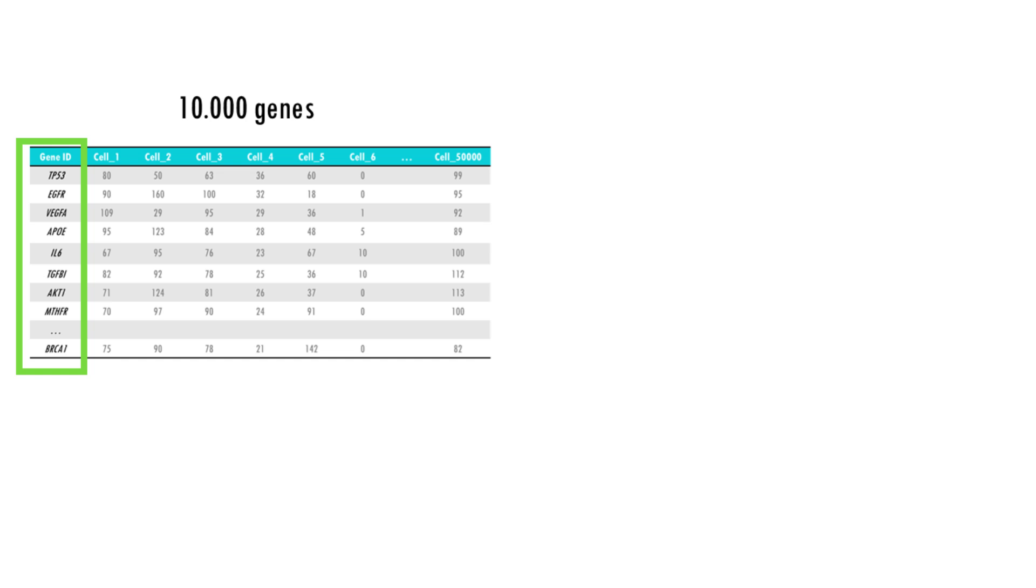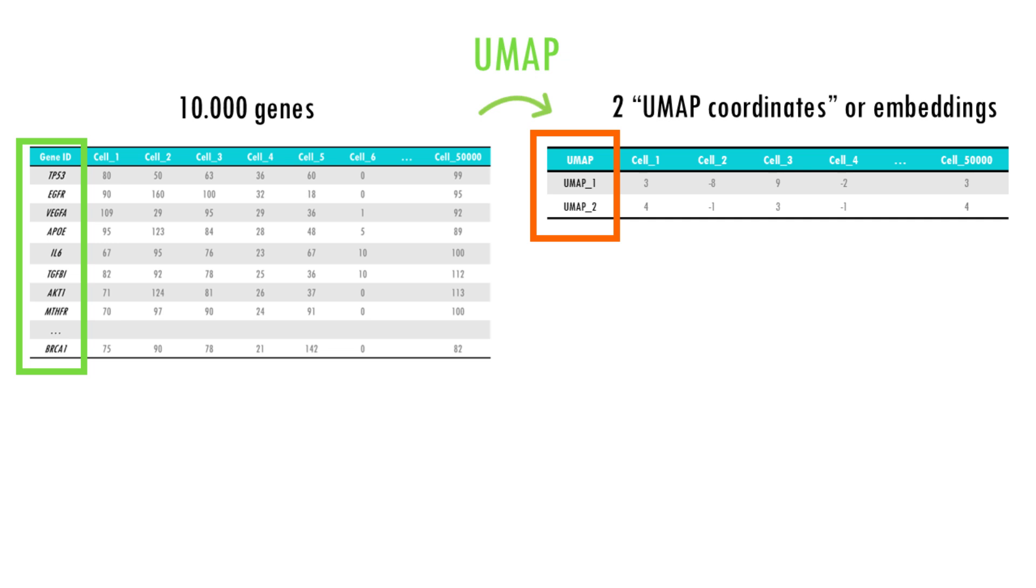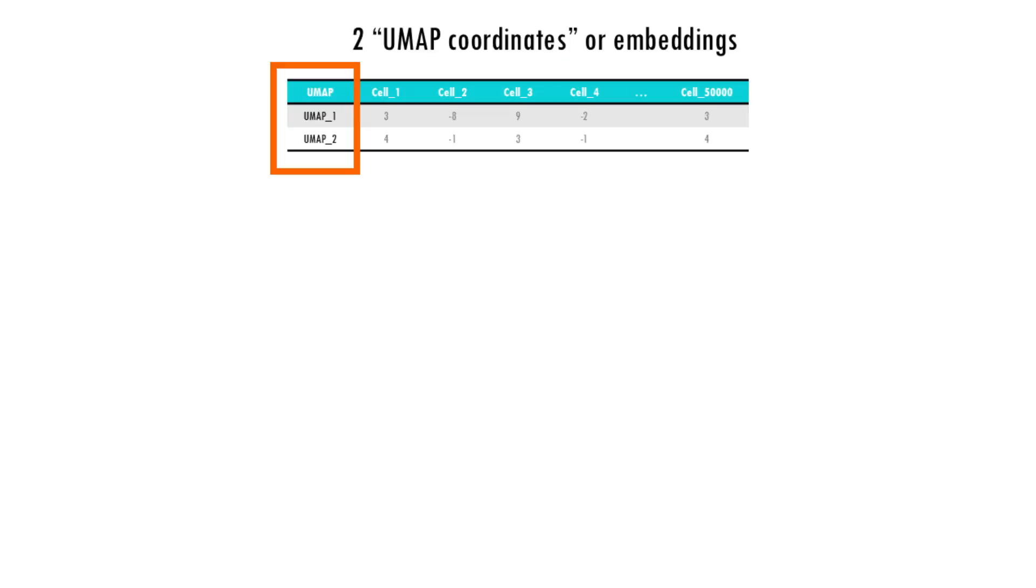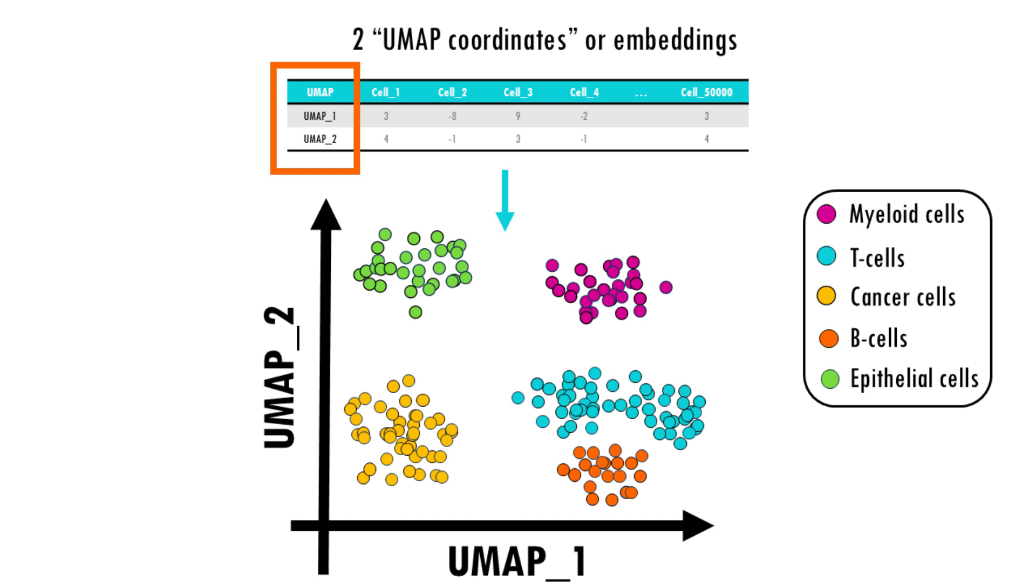Just like TSNE, UMAP tries to take the high dimensional data and map it into a lower dimensional space, usually 2D or 3D, so we can visualize it. It does this by preserving both local and global structures, meaning it tries to keep clusters of cells close together, but also respects the overall organization of the data.